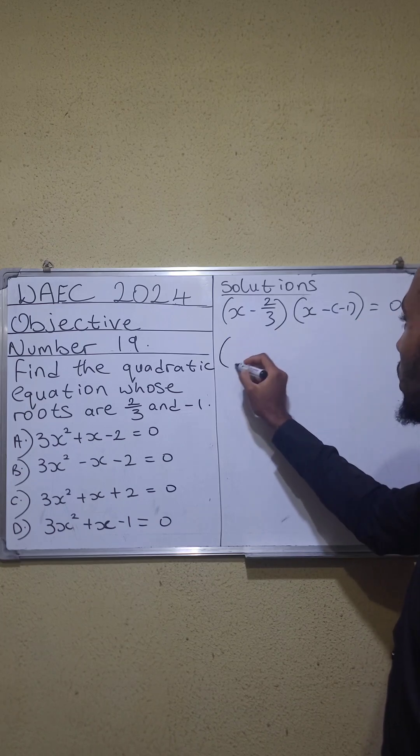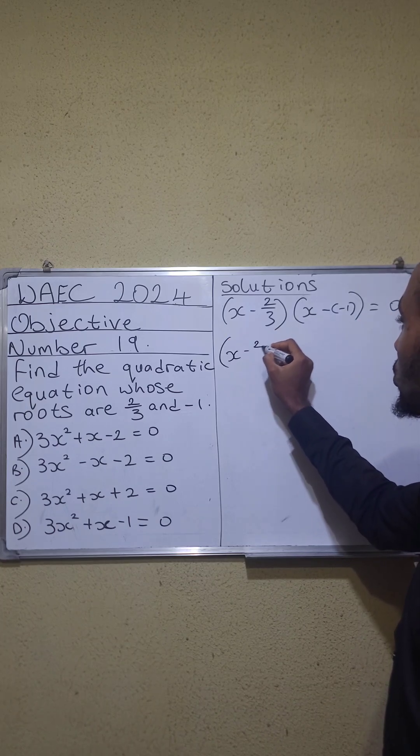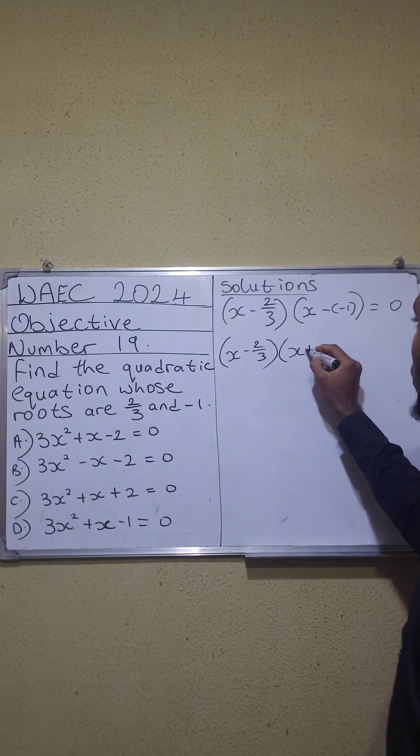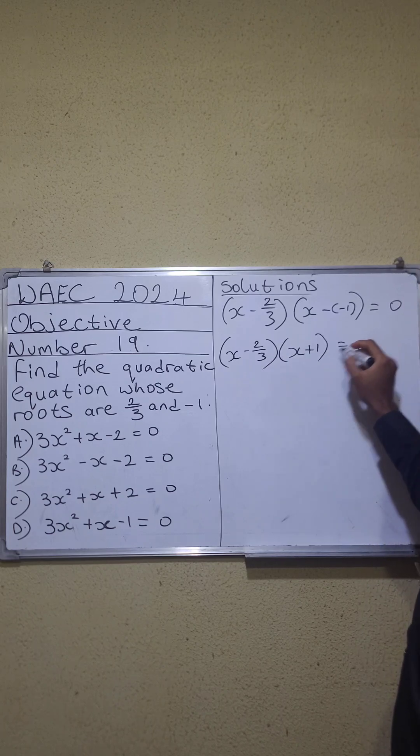Then you simplify and open the brackets. This becomes x minus 2 over 3 bracket x plus 1 equals 0.